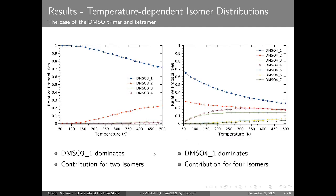In addition to non-covalent interactions, we investigated the stability of these clusters as temperature is increased. For the trimer, it comes out that when temperature is increased, only two of the structures are really meaningful and contributing to the cluster population, while the other two are negligible and their contribution to the overall properties of the system is minimal.